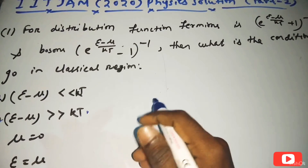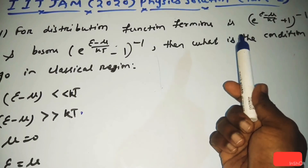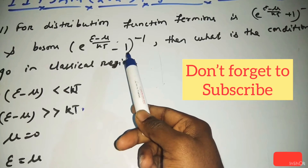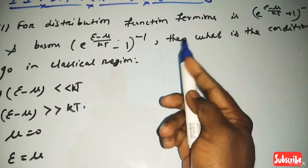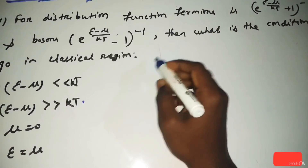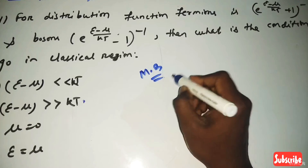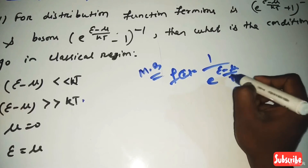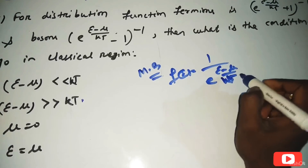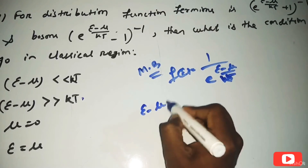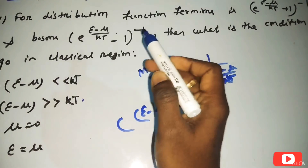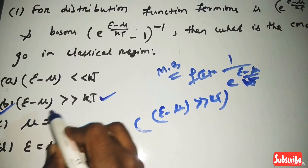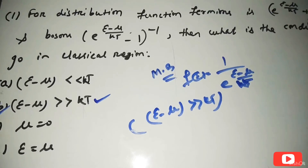The next question is regarding statistical mechanics. The distribution function for fermions is f = 1/(e^((E−μ)/kT) + 1), and for bosons is f = 1/(e^((E−μ)/kT) − 1), where μ is the chemical potential. The condition for the classical region is that E − μ >> kT, which gives the Maxwell-Boltzmann distribution. So option B is the correct answer.